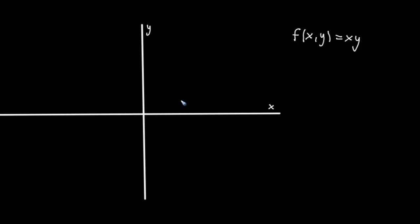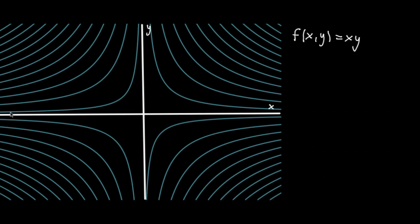And I have a video on contour maps if you are unfamiliar with them or are feeling uncomfortable. And the contour map for x times y looks something like this. And each one of these lines represents a constant value. So you might be thinking that the constant value for f(x, y) equals 2 would be one of these lines.